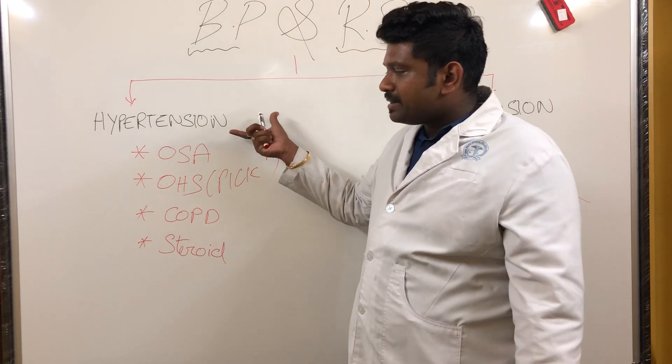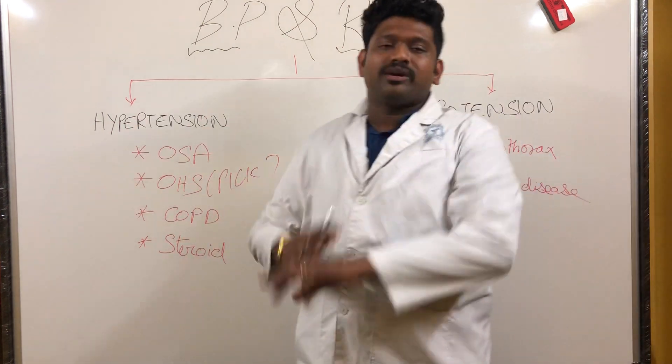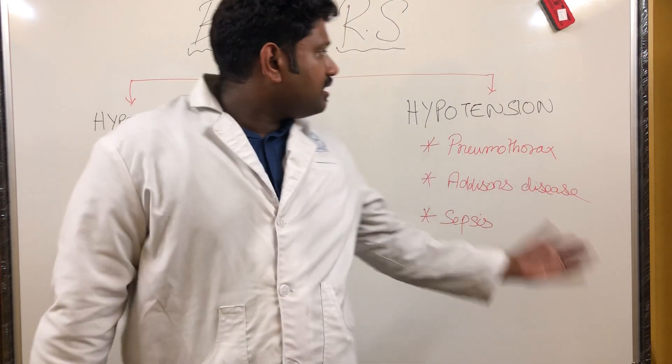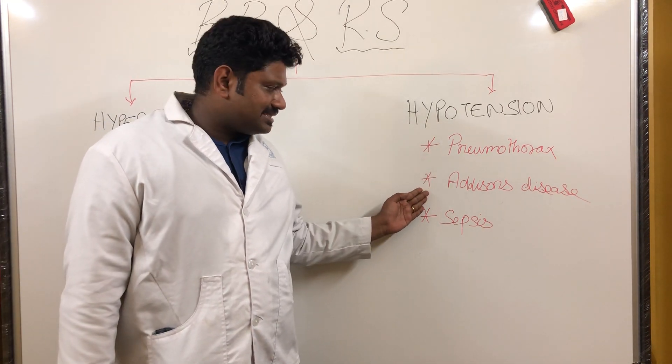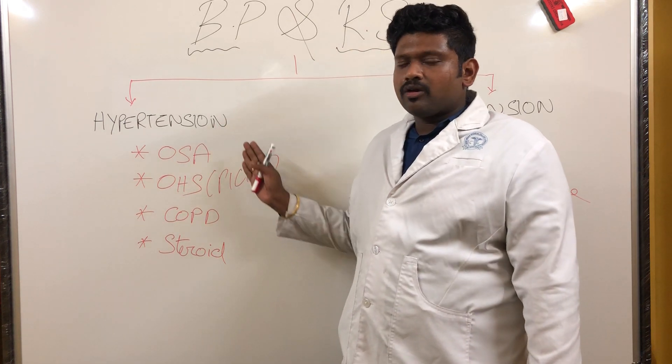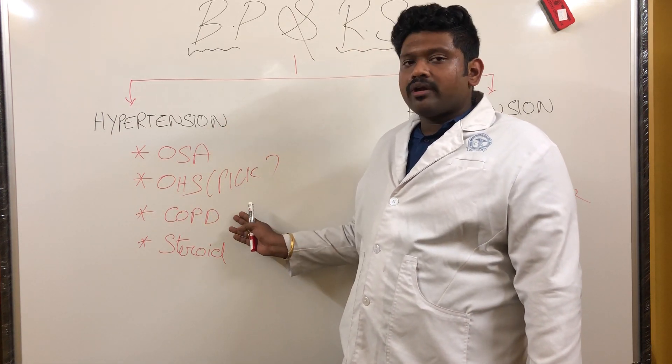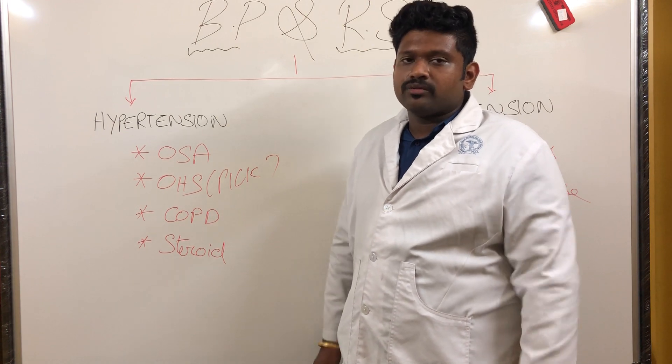Coming to a nutshell - BP in RS: Hypotension includes tension pneumothorax, Addison's disease, sepsis. Hypertension includes obstructive sleep apnea, obesity hyperventilation syndrome, chronic obstructive pulmonary disease, and steroids. Hope this video was useful. Thank you.